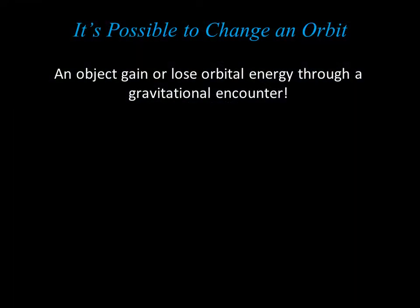Left undisturbed, planets and everything else would keep the same orbits forever. Orbits cannot change spontaneously, but they can change through exchanges of energy. One way that two objects can exchange orbital energy is through a gravitational encounter, in which they pass near enough so each can feel the effects of the other's gravity.